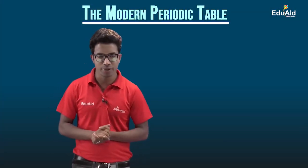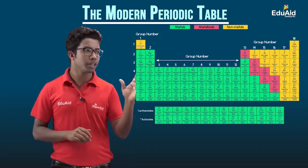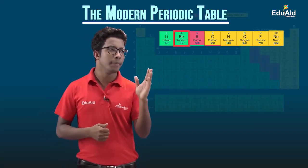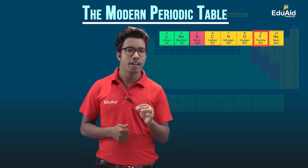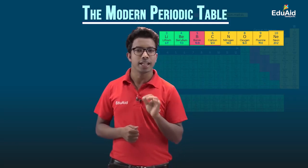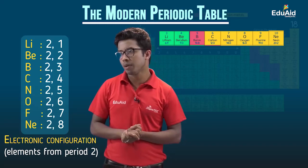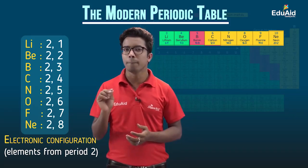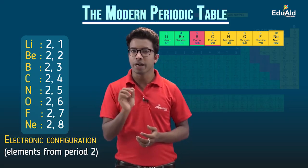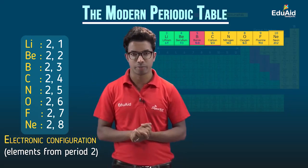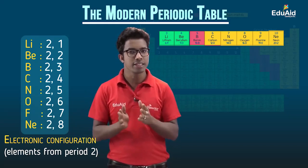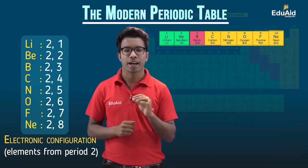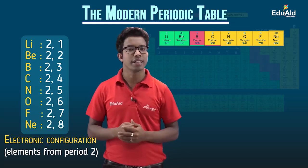Now let's discuss periods — on what basis are different elements placed in different periods. Looking at the elements from period 2 — lithium, beryllium, boron, carbon, nitrogen, oxygen, fluorine, and neon — their electronic configurations show that only two numbers are written, representing the number of shells. For all elements in period 2, the number of shells is 2, in which all their electrons are distributed. Throughout period 2, the number of shells is fixed. This number of shells is the basis of the periods — in any period, the number of shells is fixed for all elements of that period.